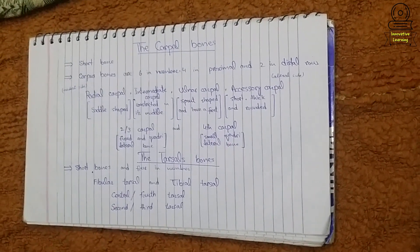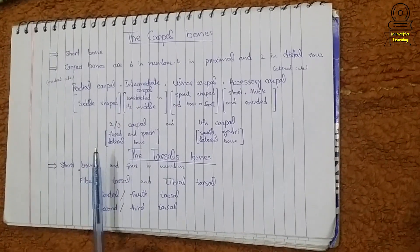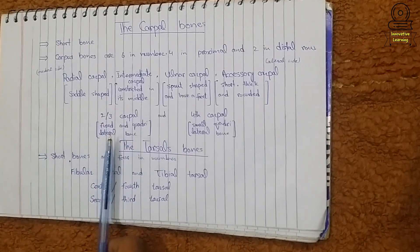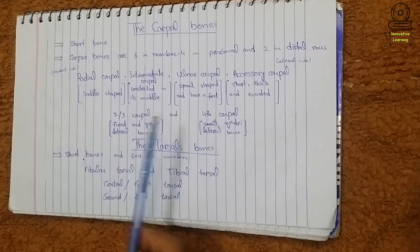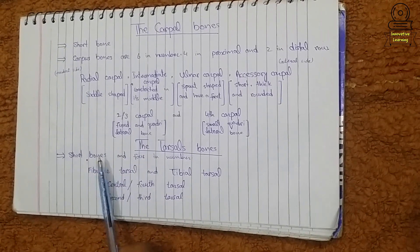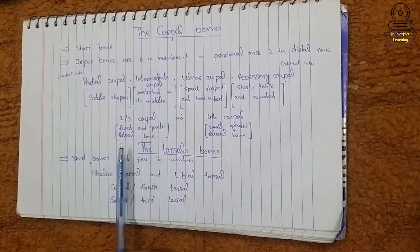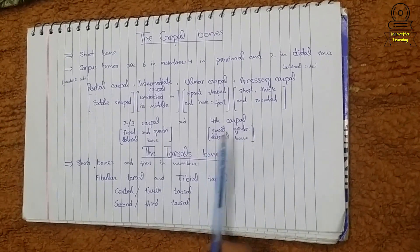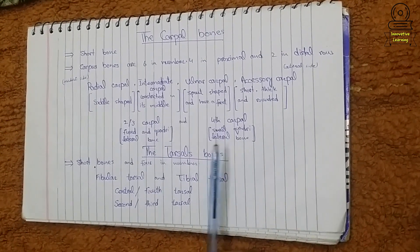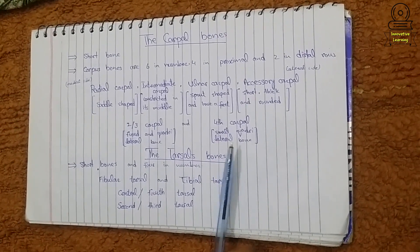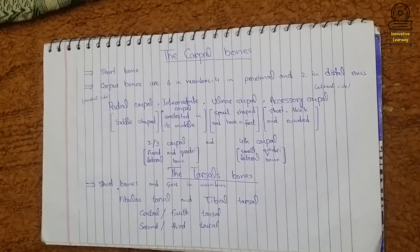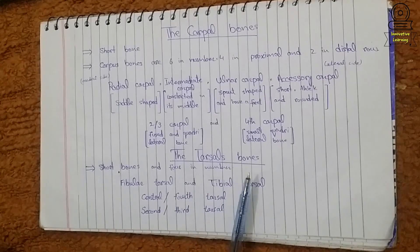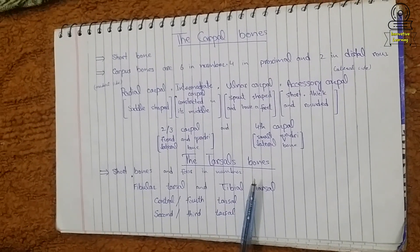We can easily identify the second and third carpal because it is the biggest bone out of the six carpal bones, and it is a quadrilateral bone. The sixth carpal is the fourth carpal — it is a small and quadrilateral bone.